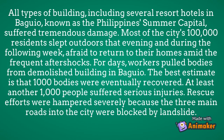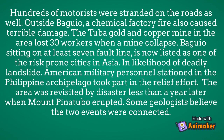For days, workers pulled bodies from demolished buildings in Baguio. The best estimate is that 1,000 bodies were eventually recovered, and at least another 1,000 people suffered serious injuries. Rescue efforts were hampered severely because the three main roads into the city were blocked by landslides. Outside Baguio, a chemical factory fire also caused terrible damage, and the Tuba Gold and Copper mine in the area lost 30 workers when a mine collapsed. Baguio, sitting on at least seven fault lines, is now listed as one of the risk-prone cities in Asia. American military personnel stationed in the Philippine Archipelago took part in the relief effort. The area was revisited by disaster less than a year later when Mount Pinatubo erupted, and some geologists believe the two events were connected.